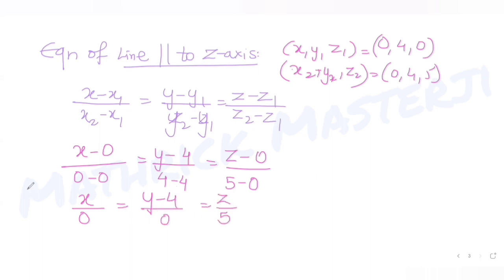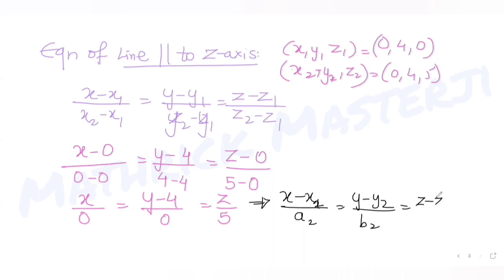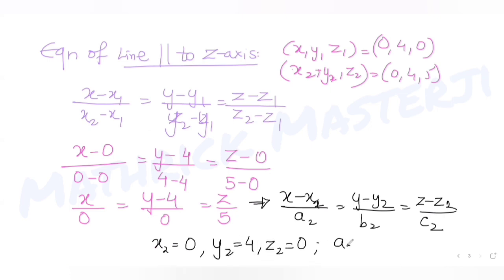Comparing this with the general form (x - x2)/a2 = (y - y2)/b2 = (z - z2)/c2, I get x2=0, y2=4, z2=0, and a2=0, b2=0, c2=5.